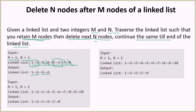For the second example, we have m equal to 3 and n equal to 2. So in this linked list, we retain the first three elements, then we delete the next two elements, then we again retain the next three elements. Then we delete the next two elements. So the result is 1, 2, 3, 6, 7, 8.